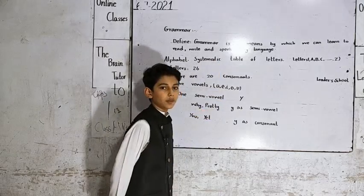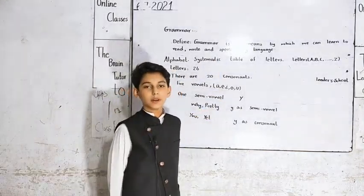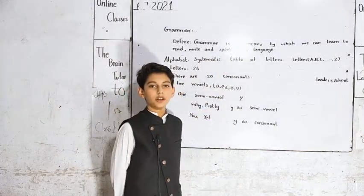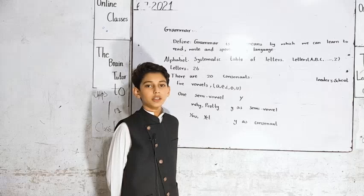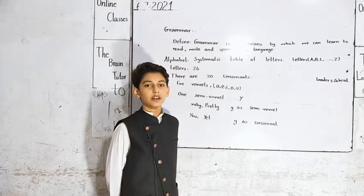Now our next point is alphabet. A systematic table of letters is called alphabet. The letters of the alphabet are A, B, C till Z.